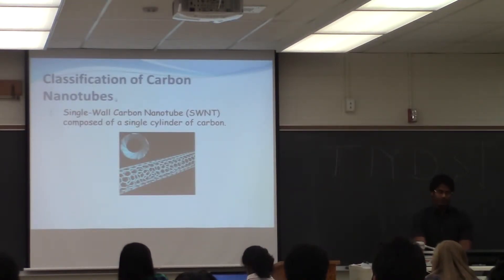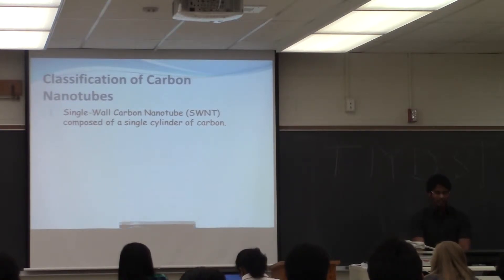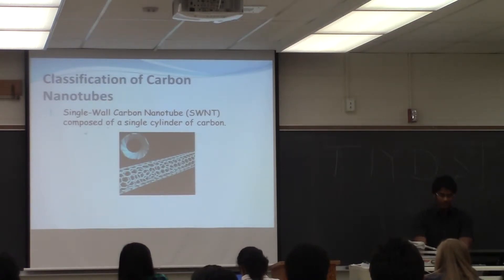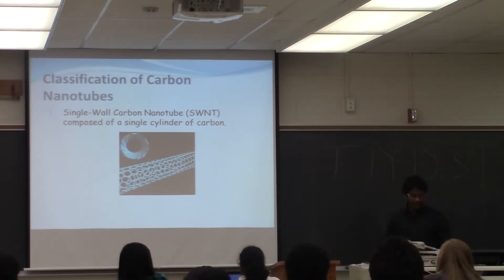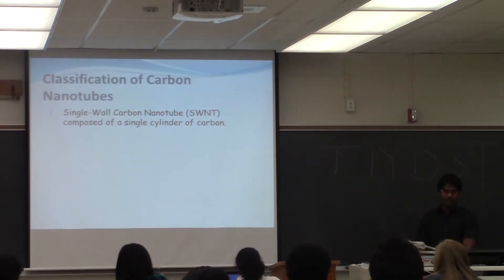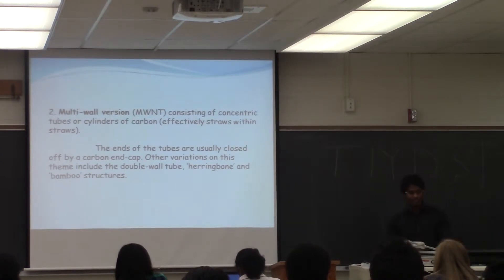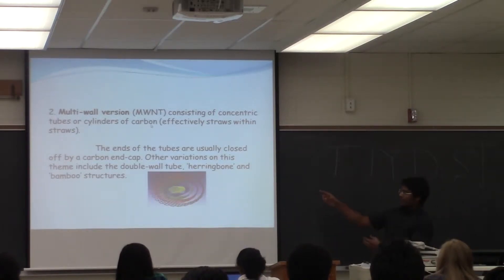Moving into the classification of carbon nanotubes, there are two types. One is called single wall carbon nanotubes — as the name is self-explanatory, it is composed of a single cylinder of carbon, as you see in the figure. The next classification is multi-wall carbon nanotubes, consisting of concentric tubes of cylinders of carbon. Imagine a straw within a straw — that is how it looks.